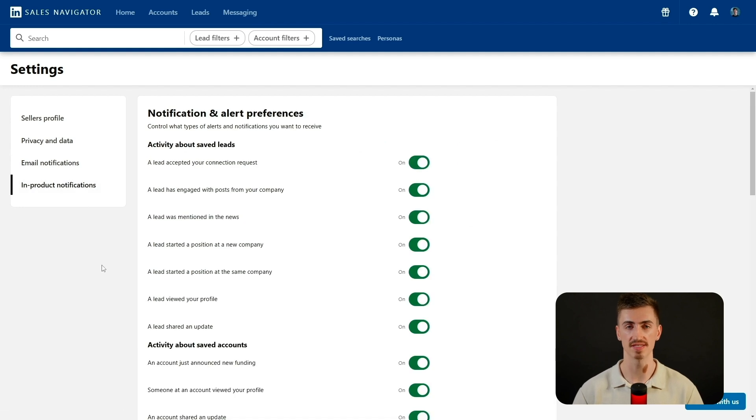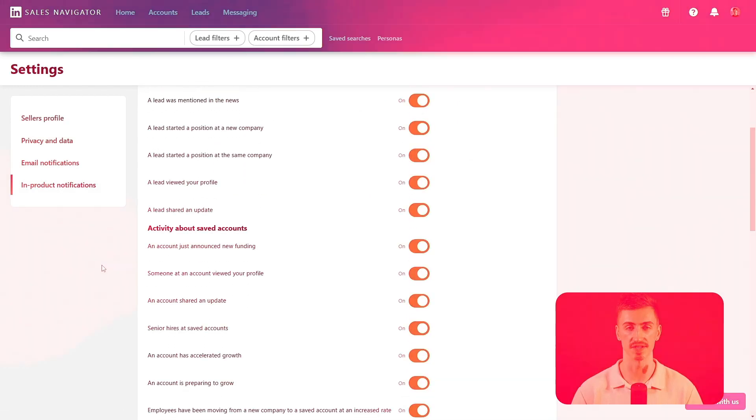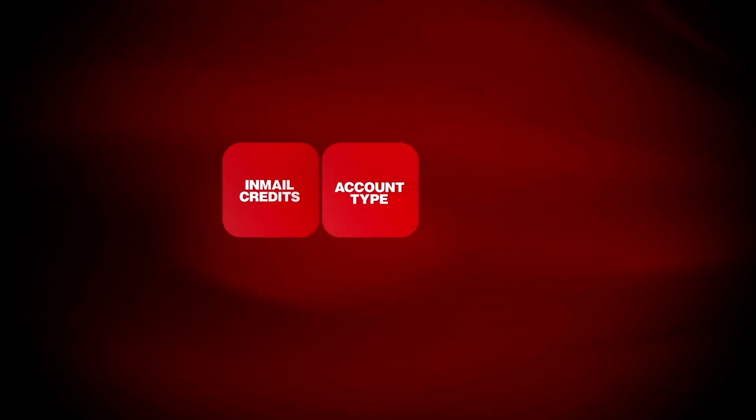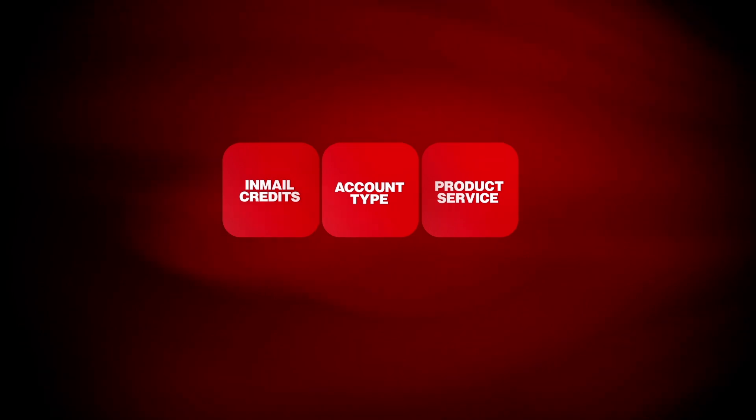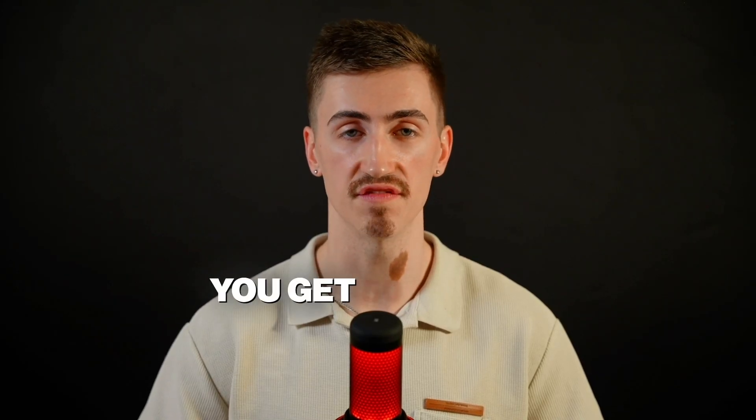Scroll through the options and toggle only the alerts that matter to you. While in settings, check your plan details under the seller's profile tab. Here you'll find your account type, remaining email credits, and an option to add product or service details to customize LinkedIn's insights. If you're on the core plan, you get 50 emails per month, with unused credits rolling over up to 150 total. Just know that they don't expire immediately, so there's no rush to use them all at once.